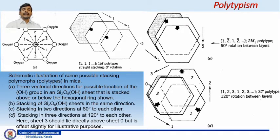In the first case, figure A, the figure shows three vectorial directions for possible locations of the OH group in an Si2O5(OH) sheet stacked above or below the hexagonal ring. In figure B, the stacking of Si2O5(OH) sheets in the same direction as denoted by vector 1. You can see that the hexagons are stacked on top of each other with all having the same unit vector direction. In that case, we can call it 1M polytype, where M stands for the monoclinic system. The rotation is 0 degrees; there is no rotation among the stacking sheets.